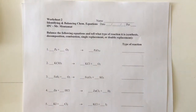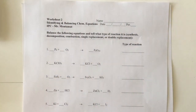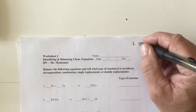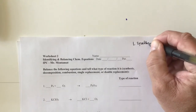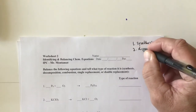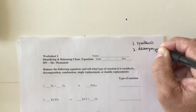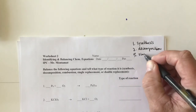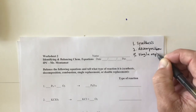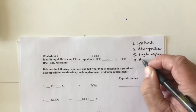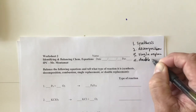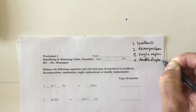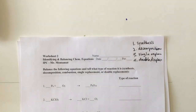This is Worksheet 2, Identifying and Balancing Equations. First, we're going to look at the type of reactions. Our types of reactions are: one, synthesis; two, decomposition; three, single replacement; and four, double displacement. Those are our four basic types of reactions.